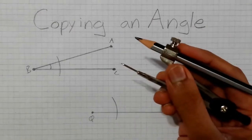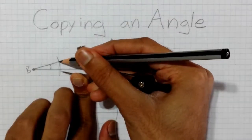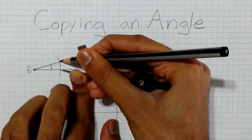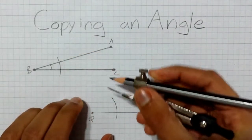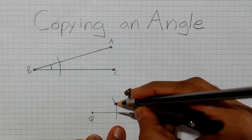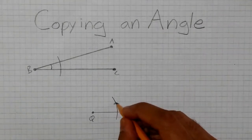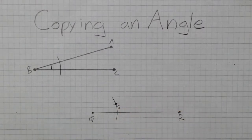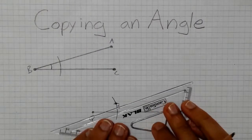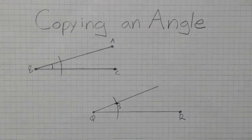Then using the compass again, measure the distance between these two intersections. Then transfer that distance — place the tip of the compass on this intersection and draw an arc that intersects the first arc. This point of intersection can be labeled point S. Then using the straight edge, connect points Q and S to form an angle identical to the original angle.